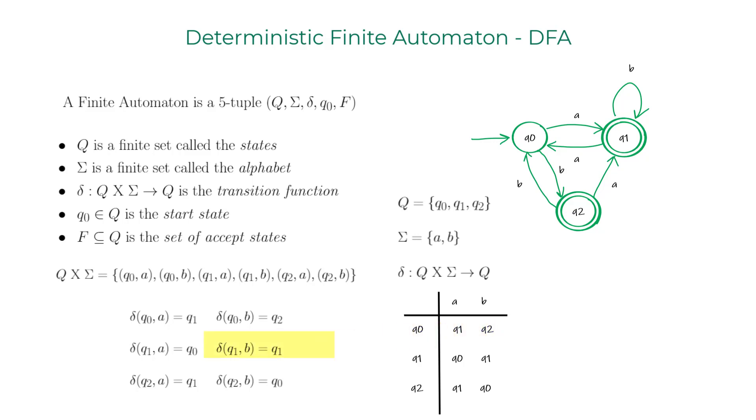Similarly, Delta of Q1 comma A maps to Q0. Delta of Q1 comma B maps to Q1. I'll show this from the DFA perspective as well. Delta of Q2 comma A maps to Q1. Delta of Q2 comma B maps to Q0.